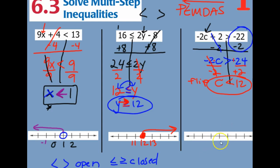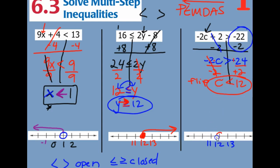So we have 12 — so 11, 12, 13. There's no equal to, so it's an open circle. And then like an L, less than 12 would be towards 11, or to the left.